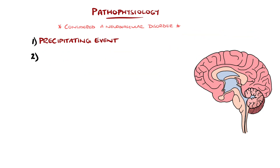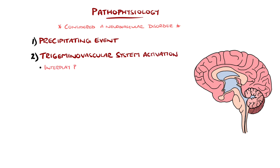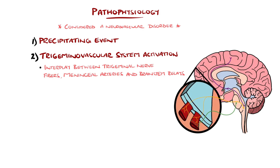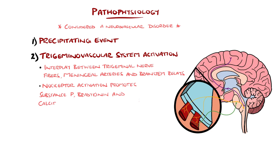This then activates the trigeminovascular system, another key player, which is a term that describes the interplay between trigeminal nerve fibers, their innervation of the meningeal arteries and the relays through the brainstem. Activation involves triggering nociceptors in the meninges, and these nerve terminals then release peptides such as substance P, bradykinin, and particularly of note, calcitonin gene-related peptide, which as we'll see later, is a therapeutic target.